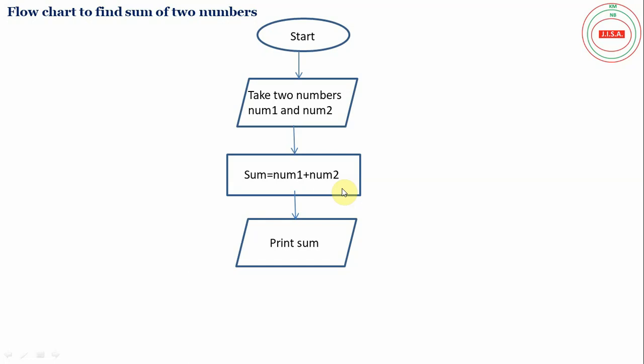Now our work is done. So we move to the end of the flowchart with the help of arrow. At last, in the oval box, we write end or stop.